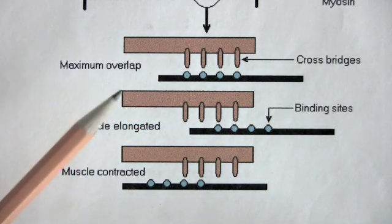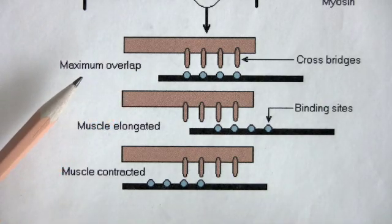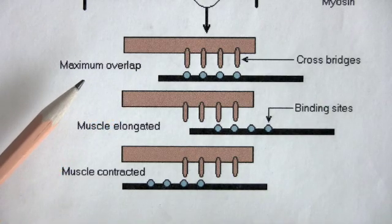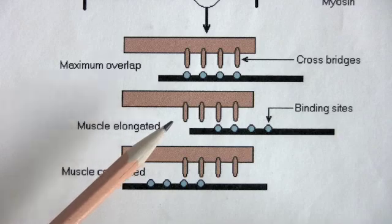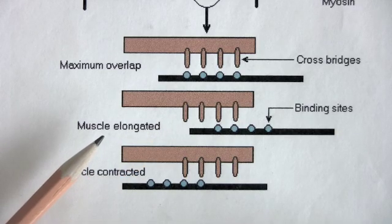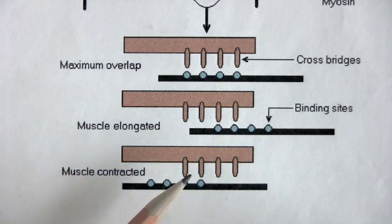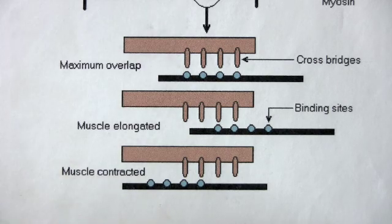In skeletal muscle, maximum strength of contraction occurs when maximum overlap of thick and thin filaments exists. If the muscle is elongated before the contraction, the strength of contraction is less. If the muscle is partially contracted before contraction, the strength of contraction is less. Remember, this is skeletal muscle.